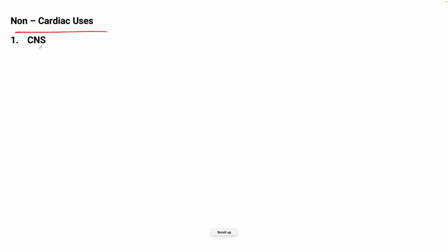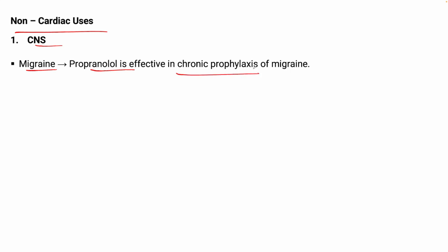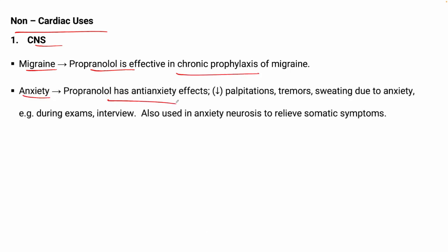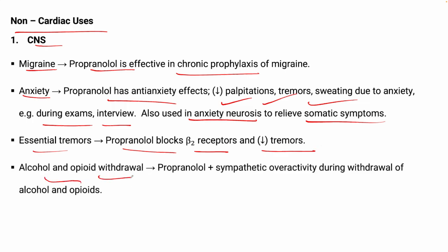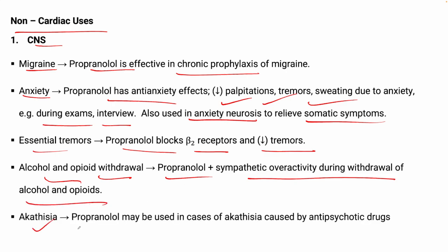Now we discuss non-cardiac uses. For CNS: in migraine, propranolol is effective in chronic treatment. In anxiety, propranolol has an anti-anxiety effect — it decreases palpitation, tremor, and sweating due to anxiety, and is used in anxiety neurosis to relieve somatic symptoms. For essential tremors, propranolol blocks beta-2 receptors and reduces tremors. In alcohol and opioid withdrawal, propranolol suppresses sympathetic overactivity. Propranolol may also be used in akathisia — the feeling of restlessness and agitation — in patients on antipsychotic drugs.